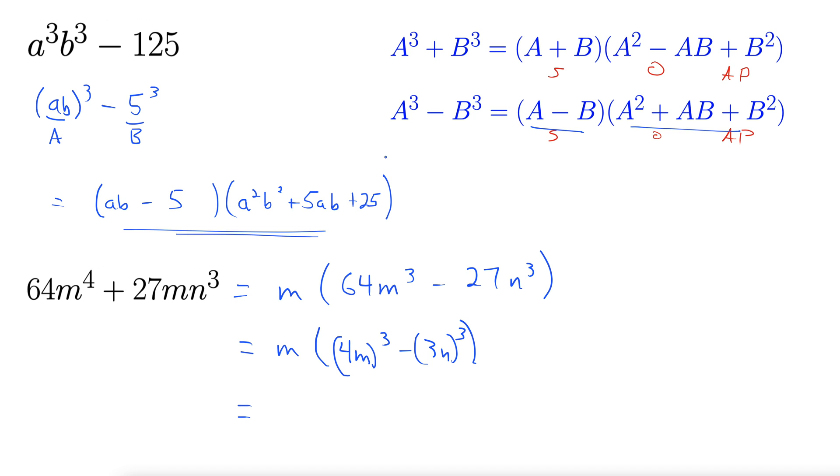So here we go, we'll use this formula here. m times 4m - 3n, times—now we square it—A² is (4m)², so 16m². Make sure you square the whole thing there.